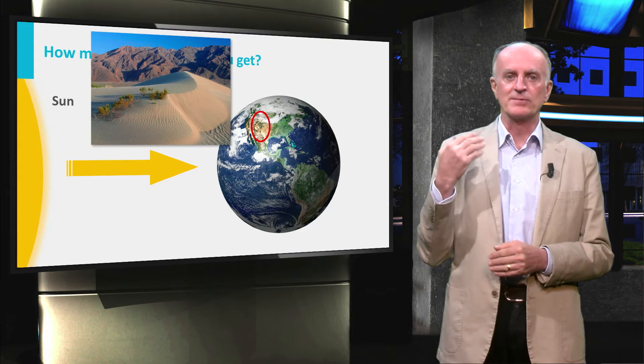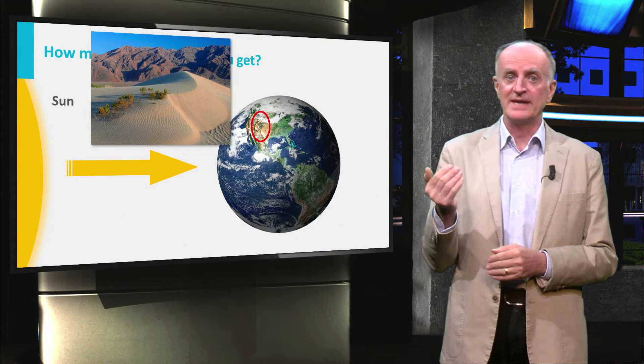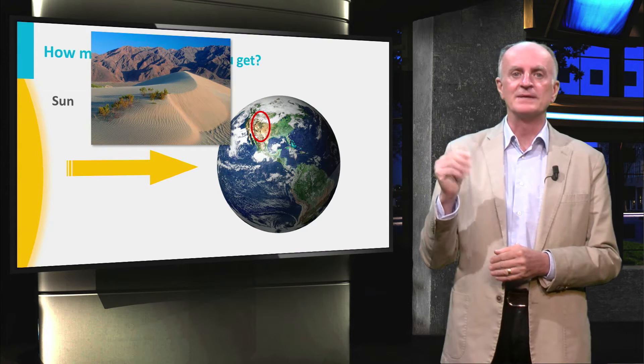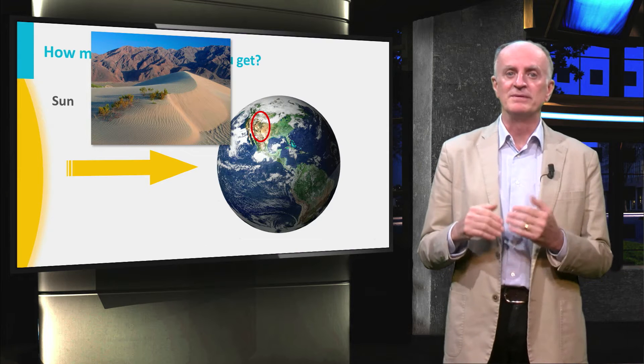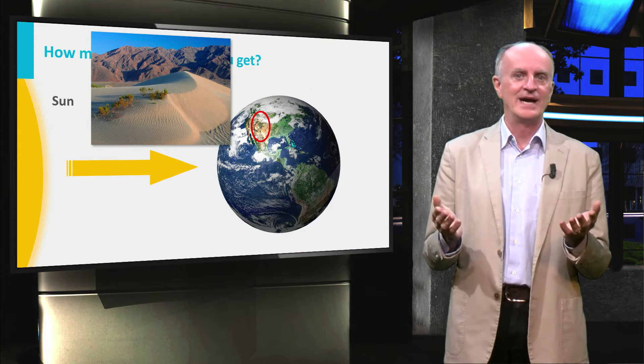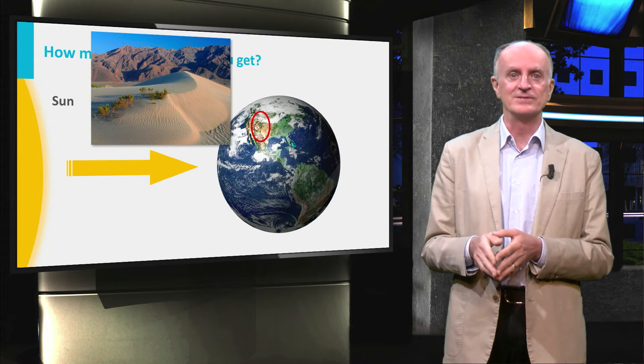Areas such as the one indicated with a red ellipse are close to the sun and are roughly perpendicular to the incoming energy. These places will be very hot. I wonder how many of you are living in these regions?